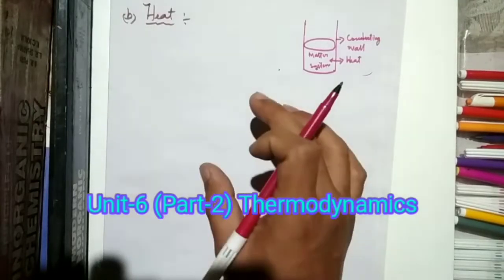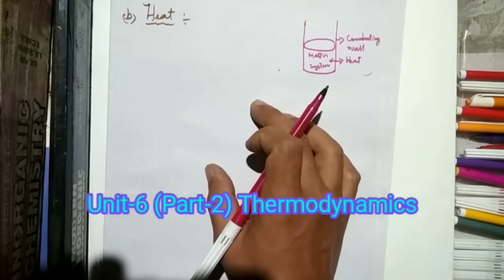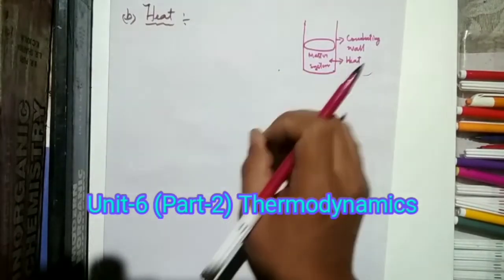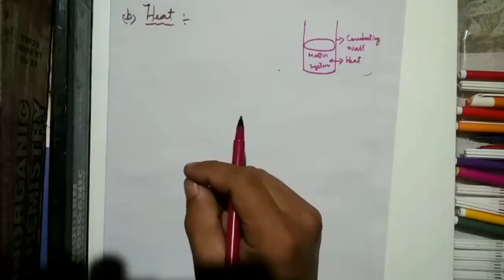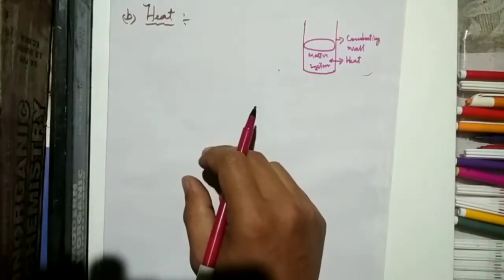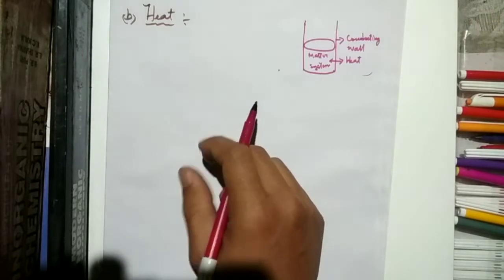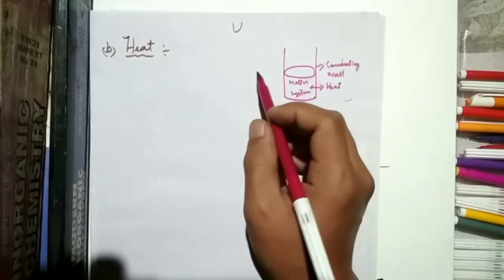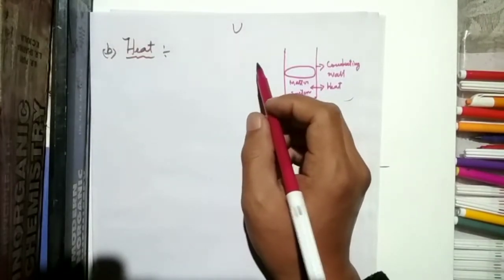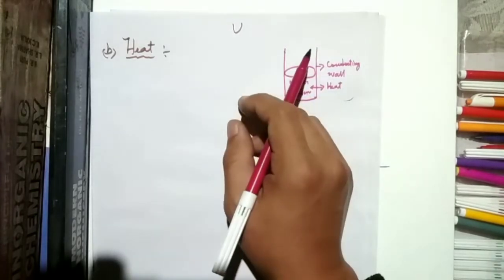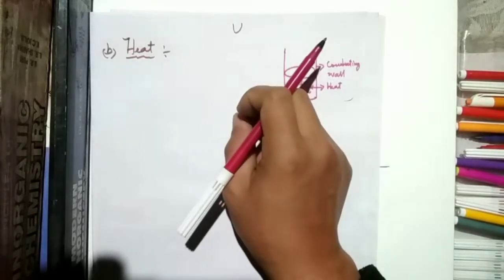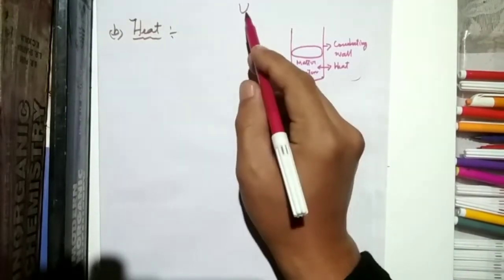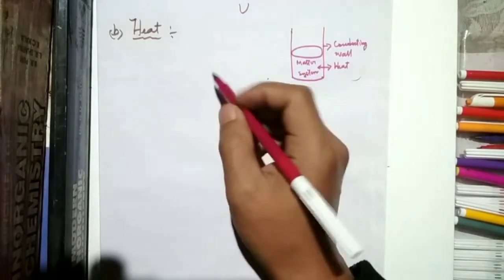Today we are going to discuss heat — how heat transfer brings a change in internal energy. Previously, in the last video, we discussed internal energy as a state function. Internal energy U does not depend on the path, but only on the initial and final values — that's why it is a state function.